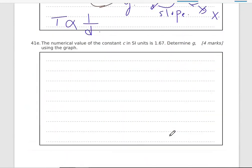E. The numerical value of the constant C in SI units is 1.67. Determine the value of G. Now I know the slope equals C divided by square root of G. So if I need G, I'm going to do cross multiplication.